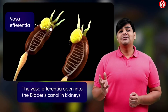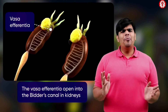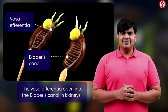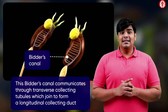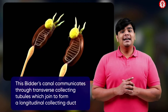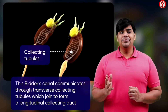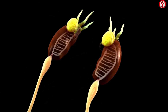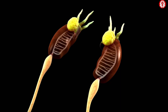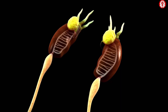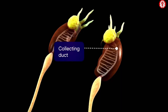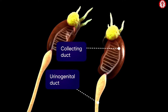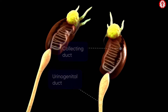The vasa efferentia that arise from the testes open into Bidder's canal in the kidneys. Bidder's canal then communicates with the transversely arranged collecting tubules of the kidneys. These collecting tubules join to form a longitudinal collecting duct which then opens into the respective urinogenital ducts.